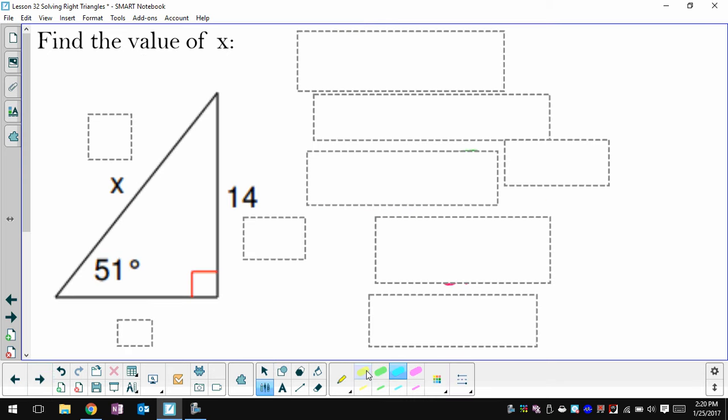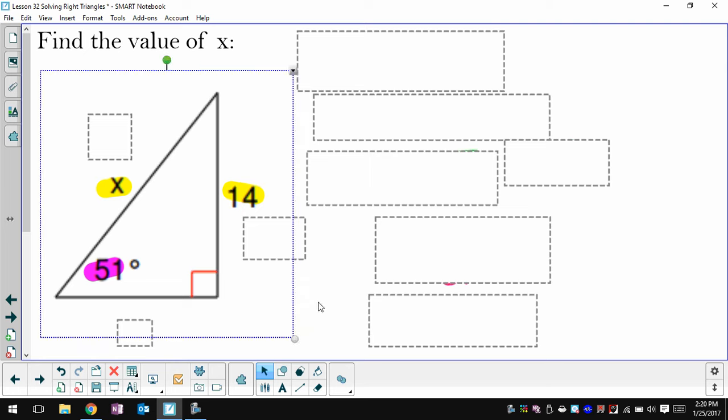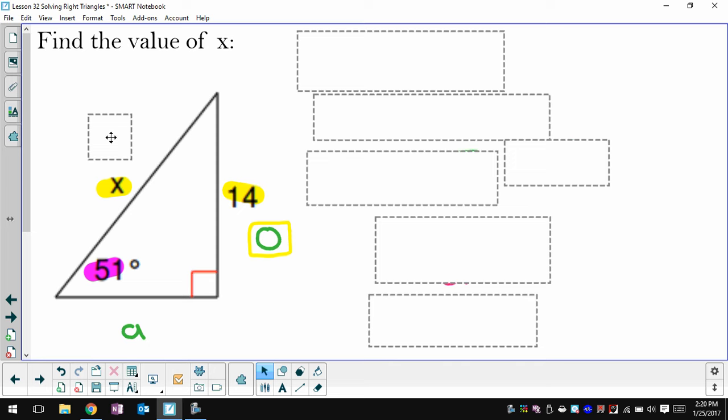So I got a similar thing here. I know two side lengths. One is 14 and one is x. I really know one side length, but I have another one labeled as x. And I know an angle in my triangle. So I'll label the sides as they relate to this angle, 51. There's my opposite. There's my adjacent. There's my hypotenuse. My opposite is 14 and my hypotenuse is the one I'm looking for. Opposite and hypotenuse relate to sine, so I'm going to use the sine function here.